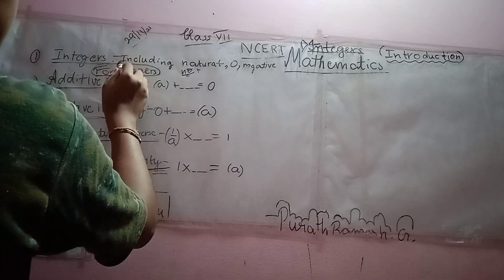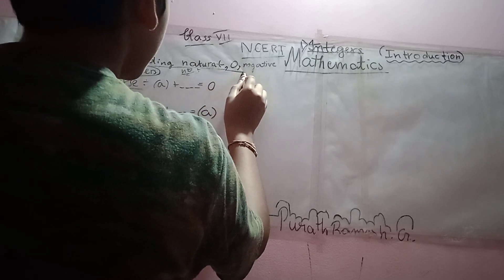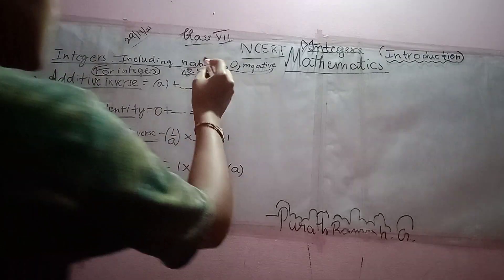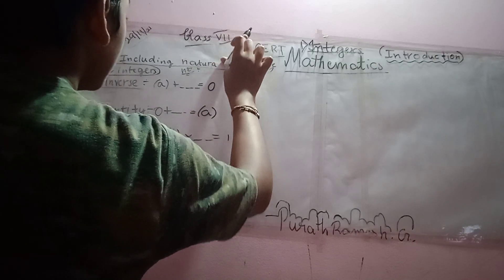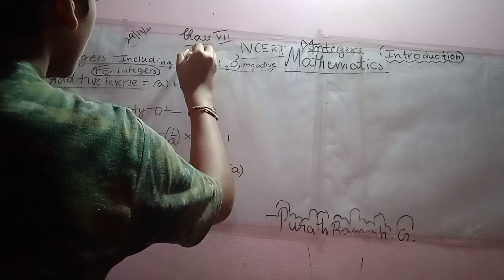So, integers include natural numbers which are counting numbers and 0 and the negative of natural numbers. We can write, instead of writing natural, we can write it as only whole numbers.